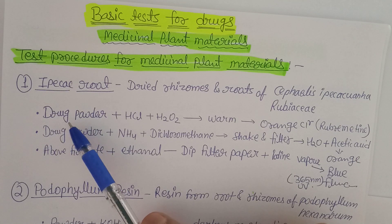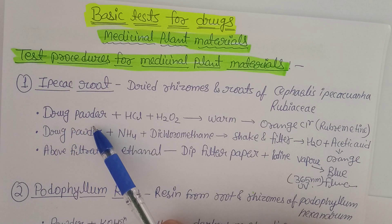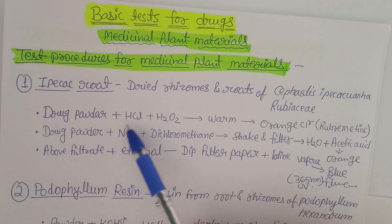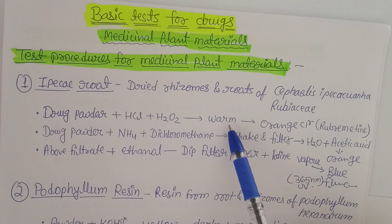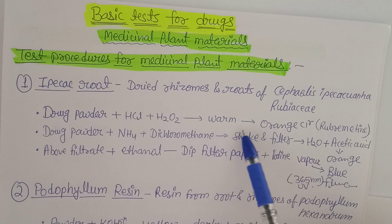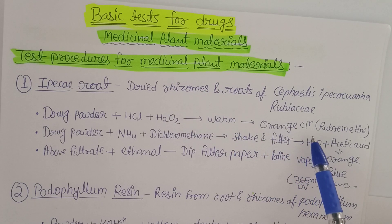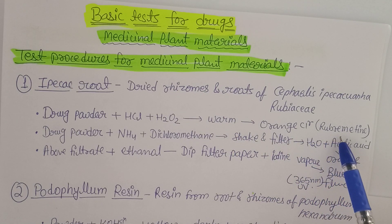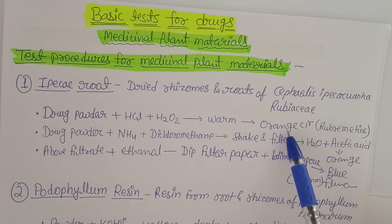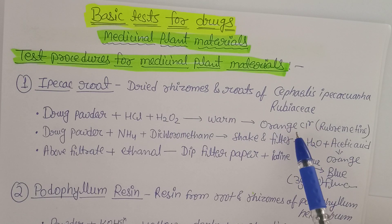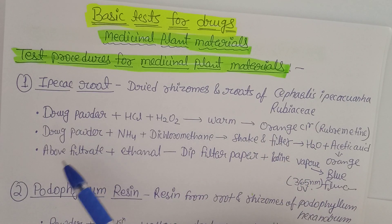First test: take the root drug powder, add hydrochloric acid, then add hydrogen peroxide, and warm the solution. Observe an orange color — this indicates the presence of rubimethine. This is one of the chemical constants present in Ipecac root. The orange color confirms that the given sample of powdered root drug is Ipecac root.